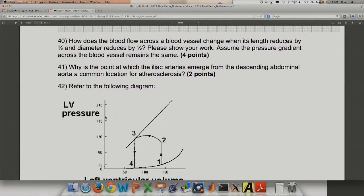Why is the point at which the iliac arteries emerge from the descending abdominal aorta a common location for atherosclerosis? Atherosclerosis happens at the site of bifurcations. Iliac is like the major site of bifurcation at the aorta lower down because it's what supplies the lower extremities. So that's the reason, because it's a branching point. Branching points basically mean turbulent flow and you think of Reynolds number.